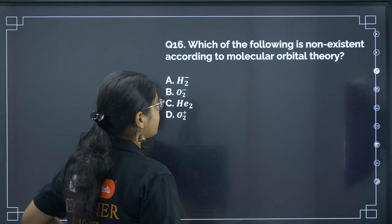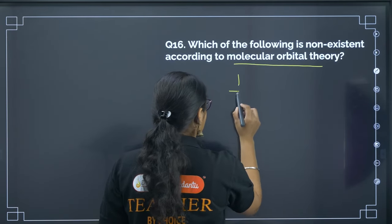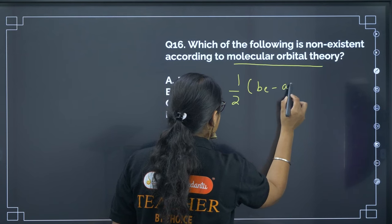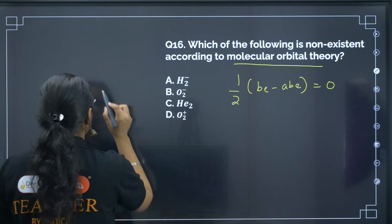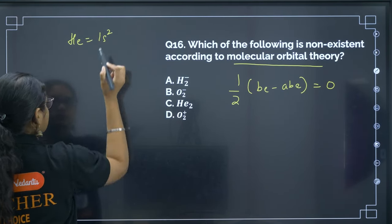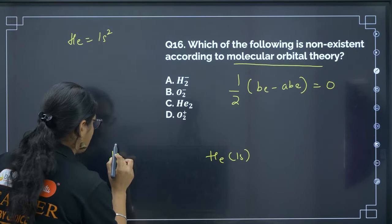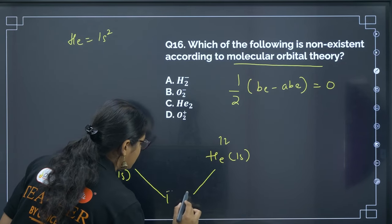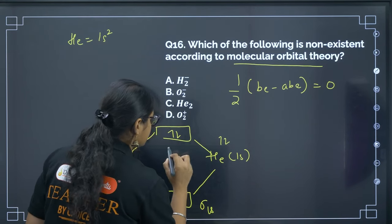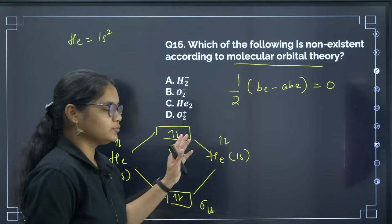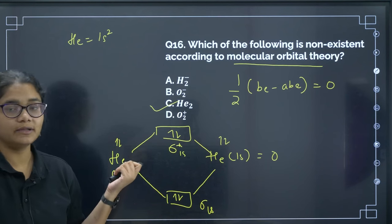Next: which of the following is non-existent according to molecular orbital theory? A molecule doesn't exist when bond order = ½(bonding electrons − anti-bonding electrons) = 0. For He2: helium configuration is 1s2; each He contributes 2 electrons, so both σ1s and σ*1s are filled. Bond order = (2 − 2)/2 = 0. So He2 is non-existent. The correct answer is option C.